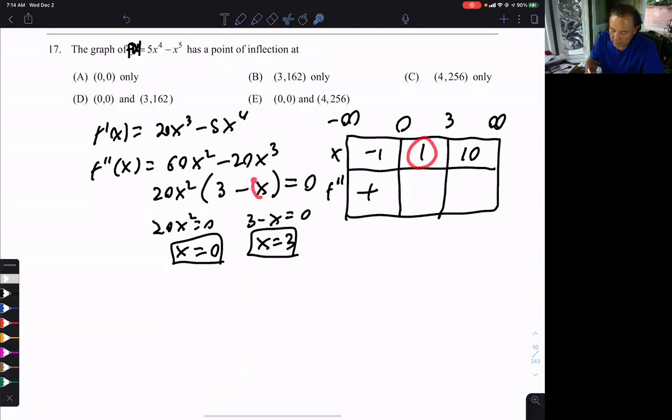Let's plug in 1. 3 minus 1 is 2, which is positive. That's always positive, so we still have a positive there.